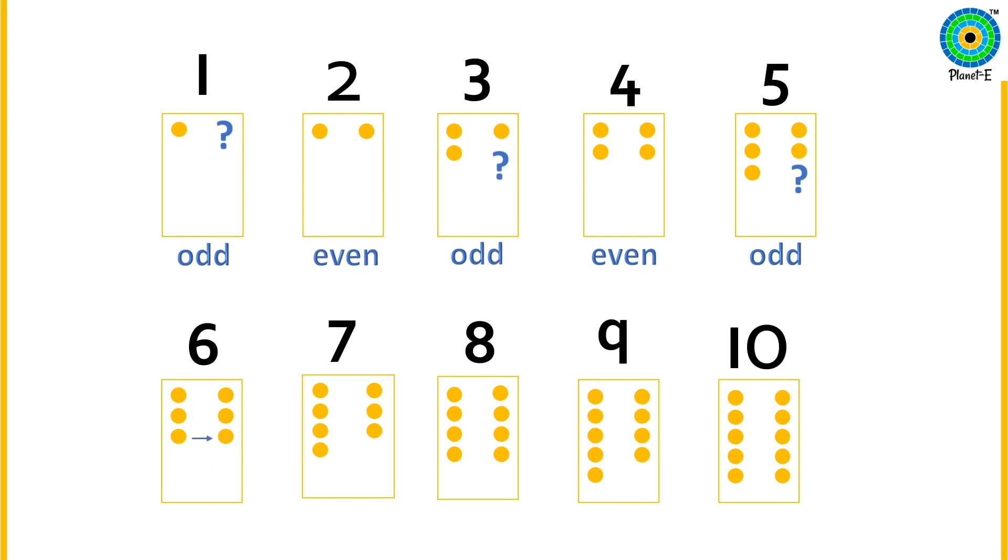Six, even number. Seven, it's an odd number.